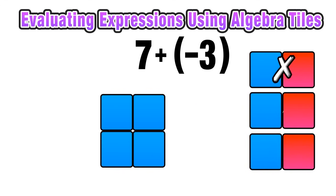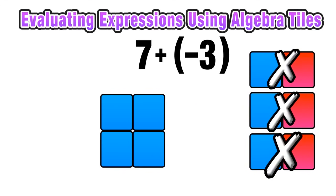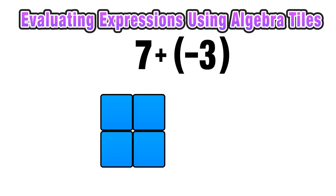Now I can pair up the combos of 1 blue square and 1 red square when I combine this. So by pairing those up, I know that a combo of positive 1 and negative 1 is going to become 0 and cancel out. And what I'm left with here is 4 blue squares. So I can say that 7 plus negative 3 is equal to positive 4.